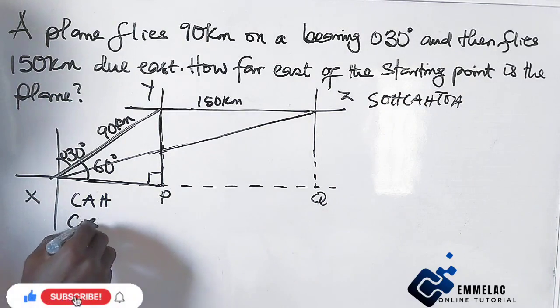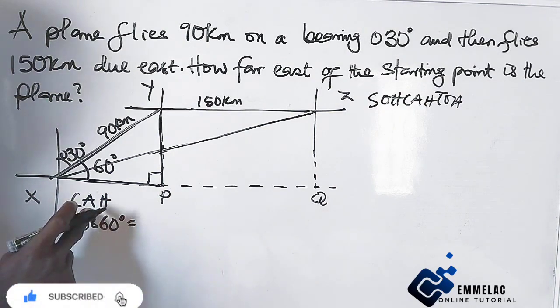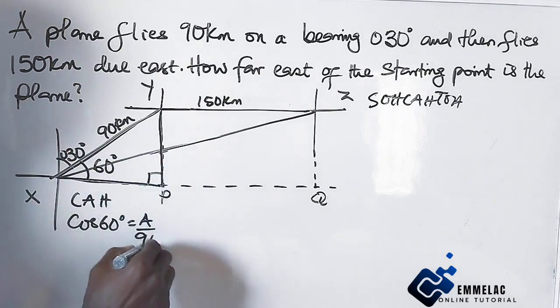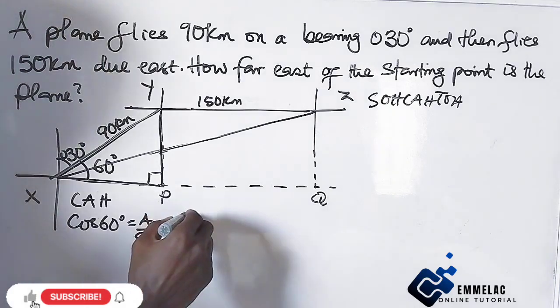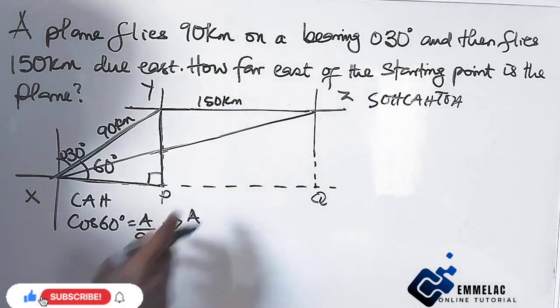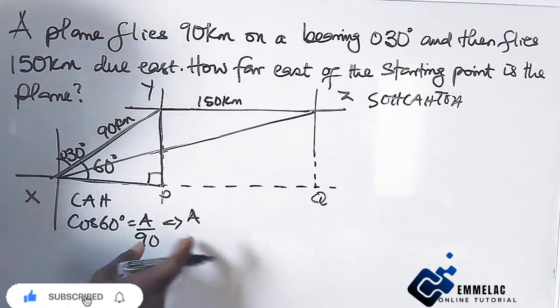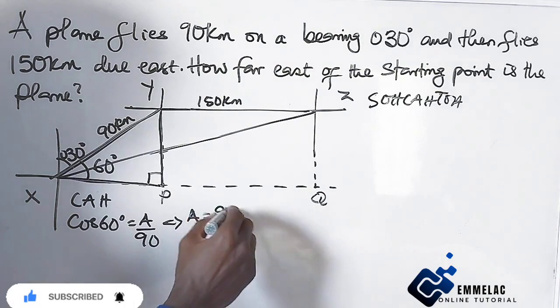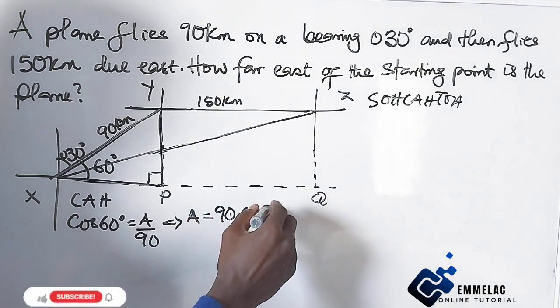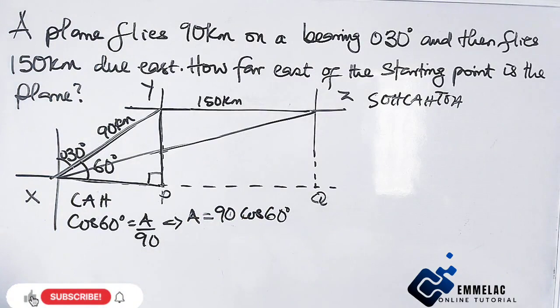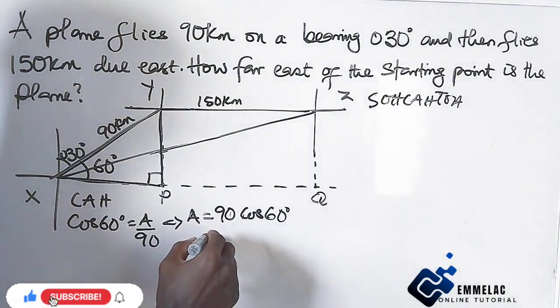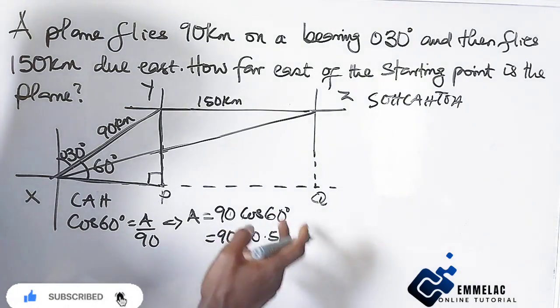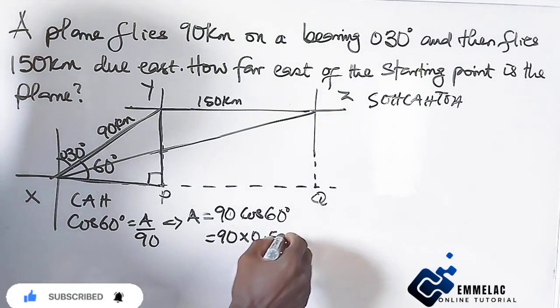We can now see this is cos 60 equals adjacent which is A over hypotenuse which is 90. So A equals, cross multiplying, 90 cos 60 degrees. We know cos 60 degrees is 0.5, so that will be 90 times 0.5, and 0.5 is 1 over 2. When we multiply that, this gives us 45 kilometers.